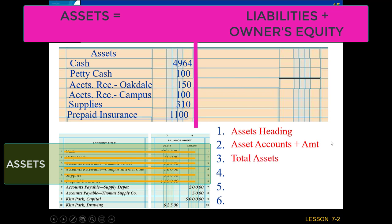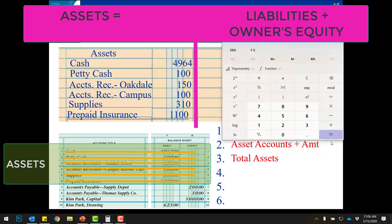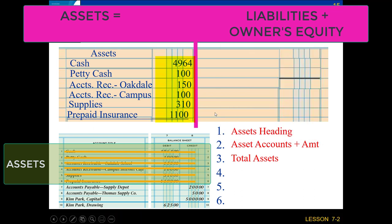Once we have each of our asset accounts and amounts listed, we total up all of our assets. So we take $4,964 plus $100 plus $150 plus $100 plus $310 plus $1,100, and the total assets amount is $6,724.